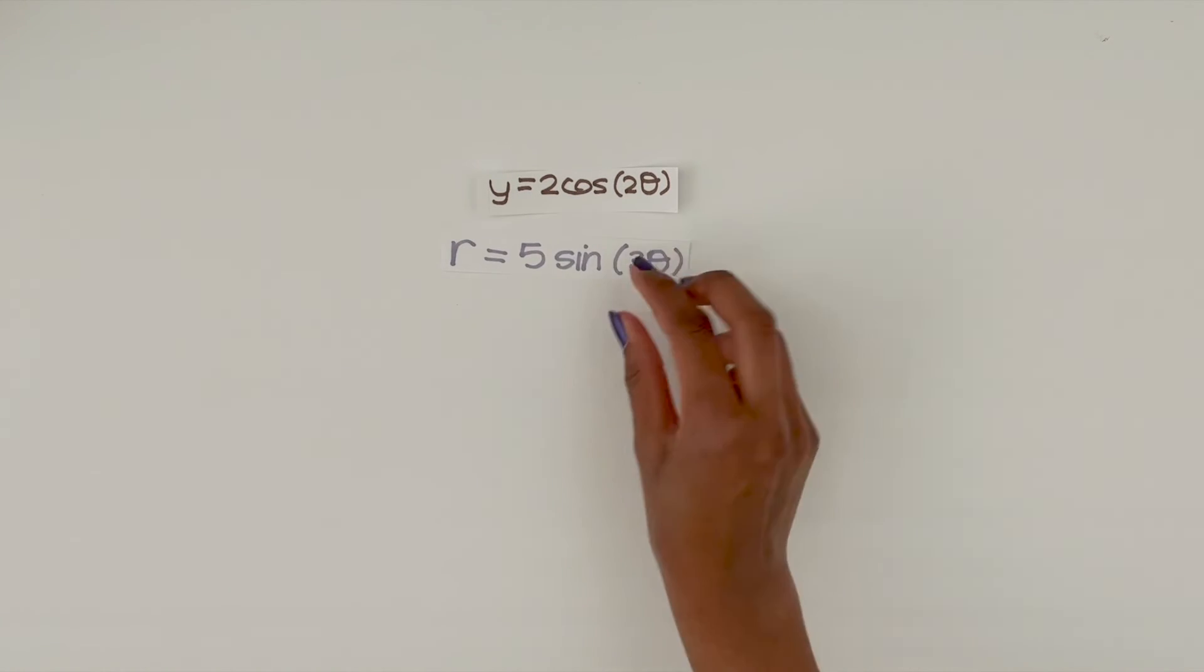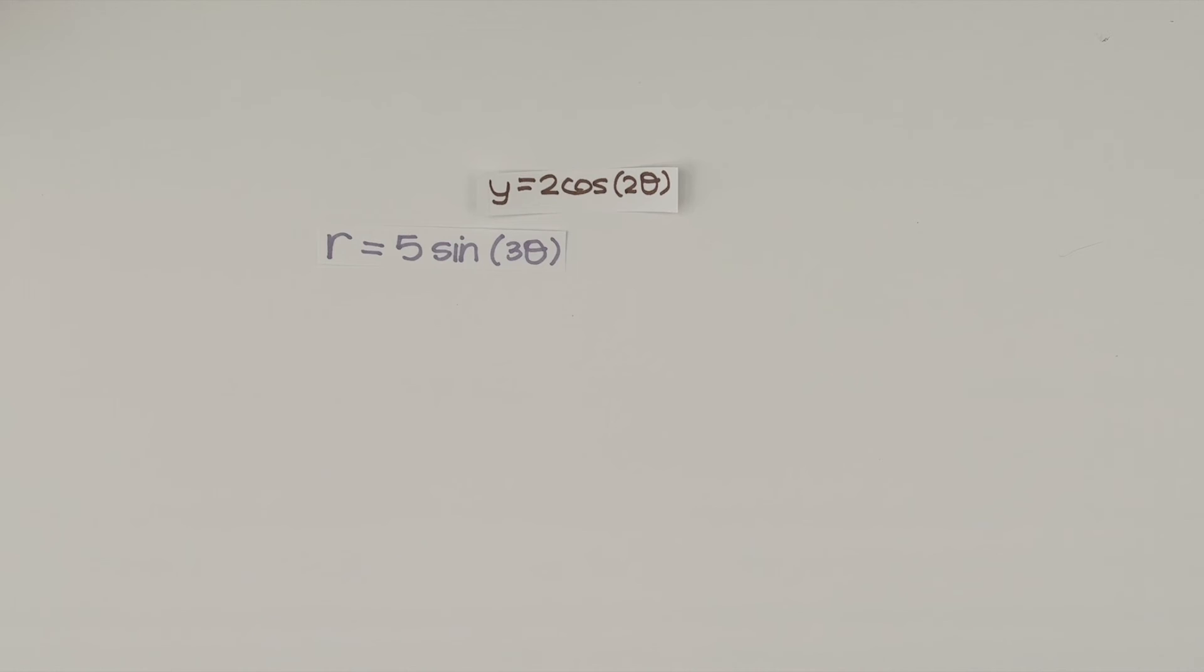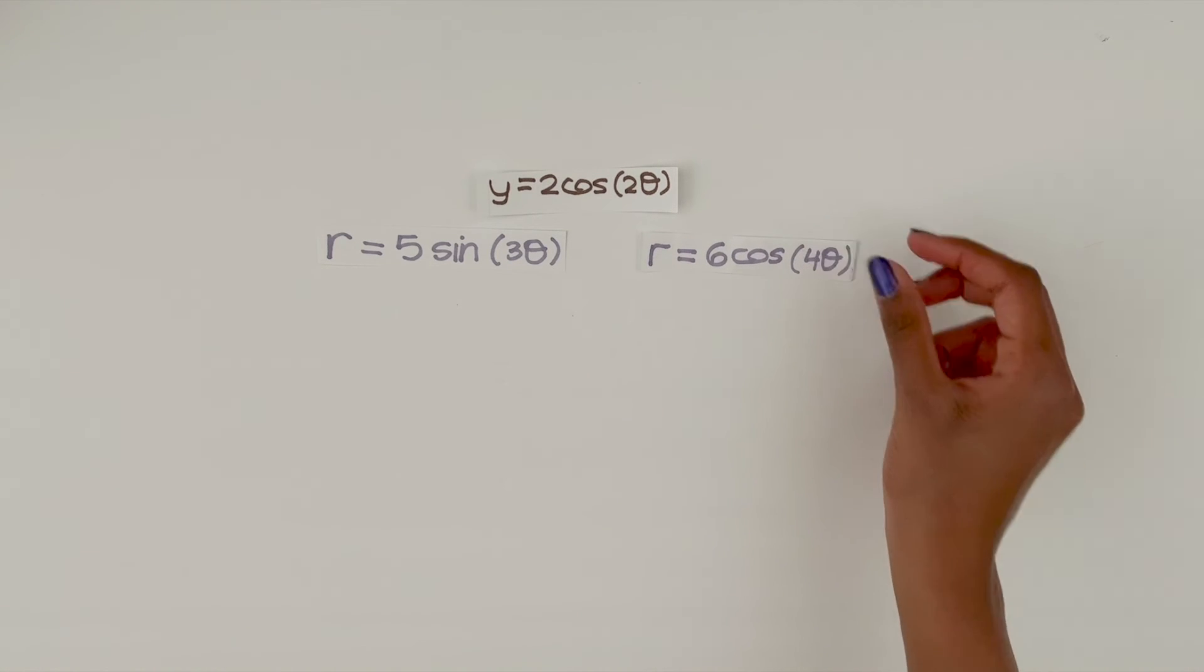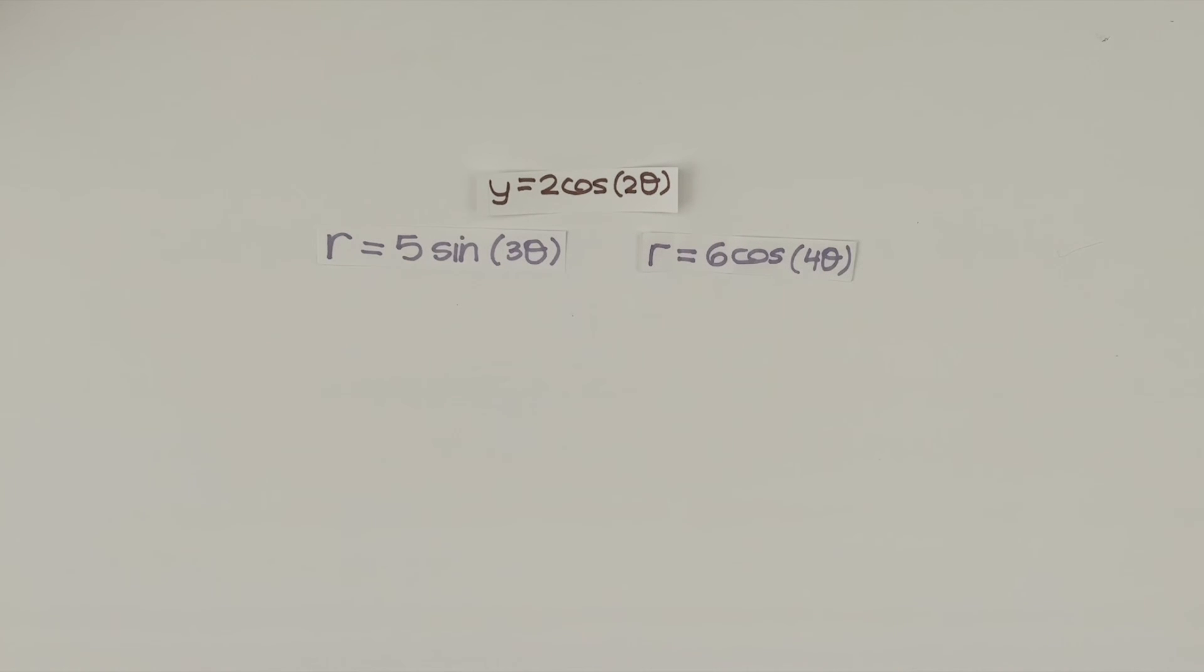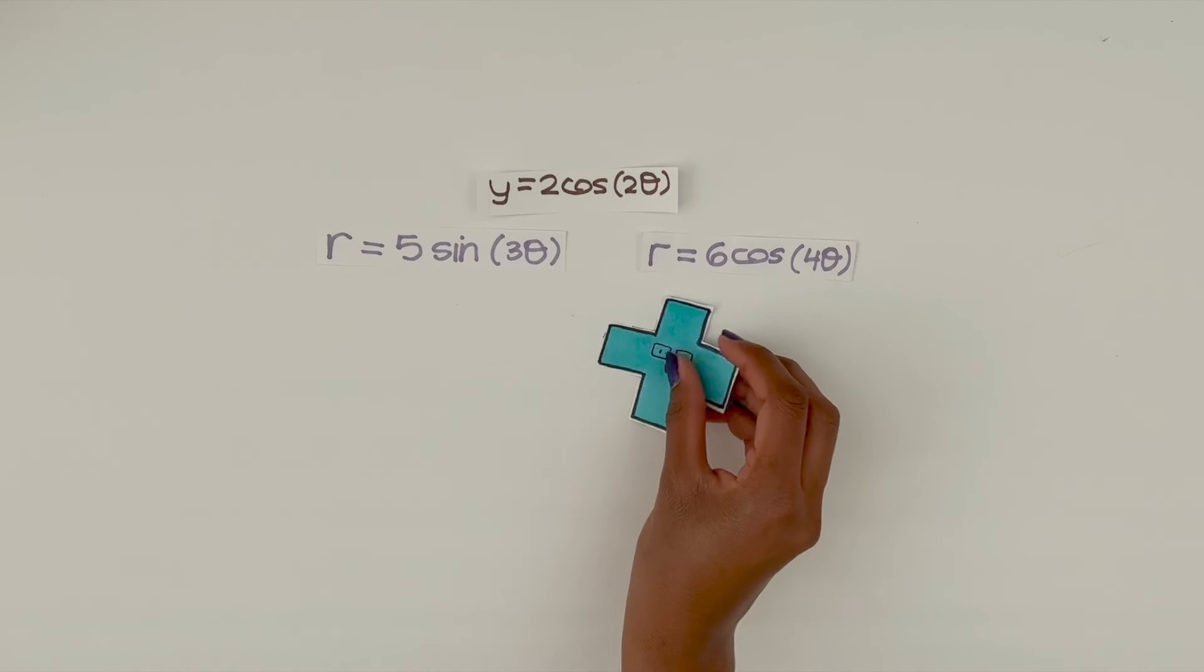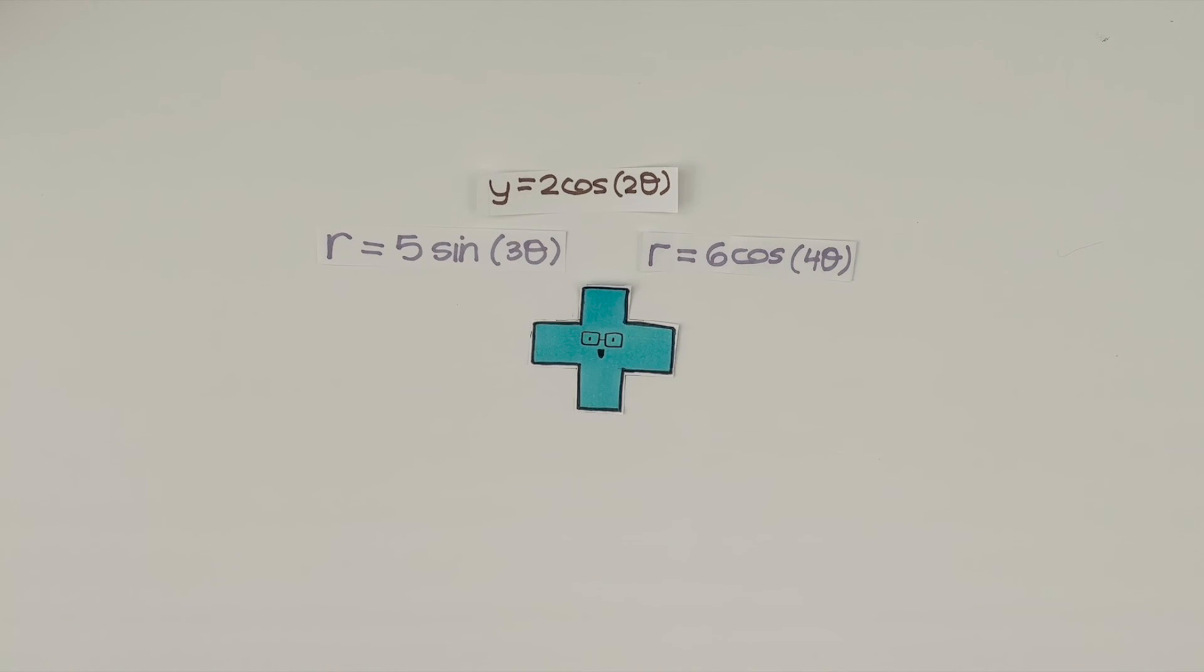Okay, now on your own, graph the following equations: r equals 5 sine of 3 theta and r equals 6 cosine of 4 theta. Pause the video and try this on your own.